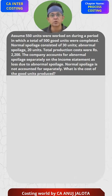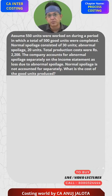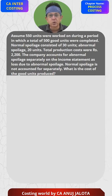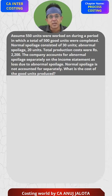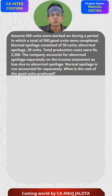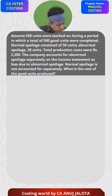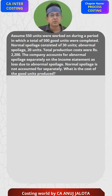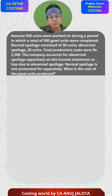What is the cost of good units produced? For that, let's find out the cost per unit first. Cost per good unit: cost per unit produced is direct material, direct labor, direct expenses, factory overhead — that is 2200. Less scrap value of normal loss, which is not given, so that's nil. Therefore, 2200 divided by expected output of 520.